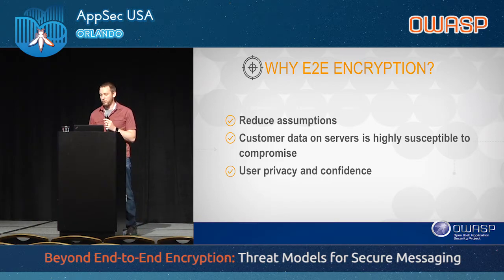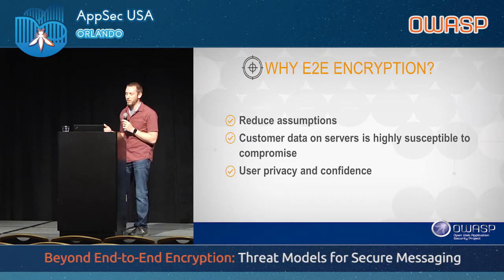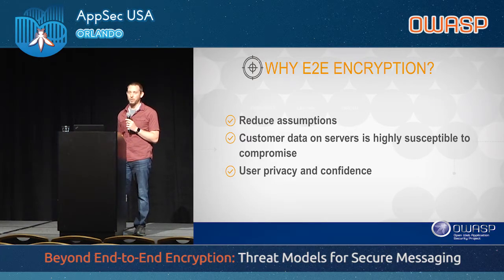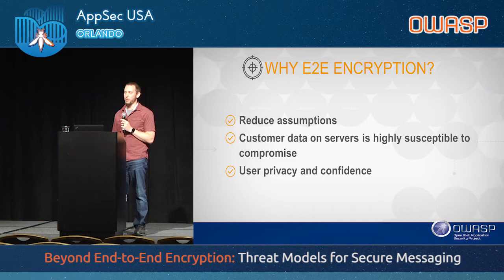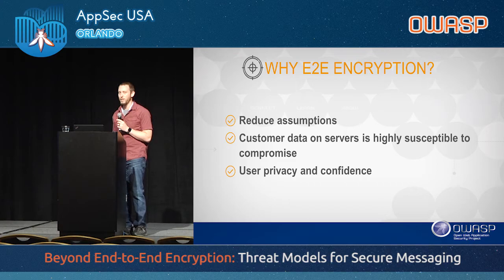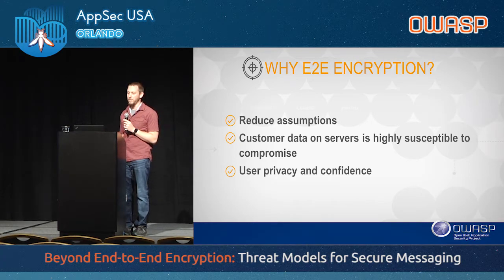We can reduce assumptions around security infrastructure. Typically we build services out of many microservices, interconnected in ways that maybe no one in the organization fully understands. If we're sending end-to-end encrypted packets through that infrastructure, it becomes a lot less risky for one piece of infrastructure to be compromised, because it doesn't necessarily lead to user data being leaked. We can also push security closer to a mathematical proof rather than a pure policy assumption.